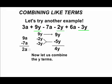So at the end, we have positive 2a plus 4y. Because the variables are different, we cannot add the terms together.